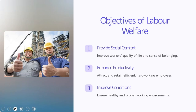Now let's look into one of the most critical aspects of this lecture: the objectives of labor welfare. There are certain critical objectives: provide social comfort, enhance productivity, and improve conditions. The first is to provide social comforts, which is essentially a strategy to improve workers' quality of life and sense of belonging. It warrants support of overall improvement of employees' lives and means there should be provisions for financial support indirectly to employees if there is dire need, developing a sense of responsibility and belongingness among employees.